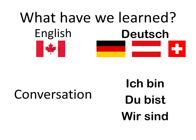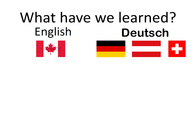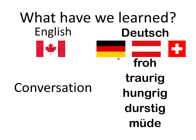If we're saying I am and you are, we have to have some words to fill in the blanks. We learned the word for happy, which is froh; sad, which is traurig; hungry, which is hungrig; thirsty, which is durstig; and tired, which is müde. Let's try these — repeat after me: Froh, traurig, hungrig, durstig, müde.